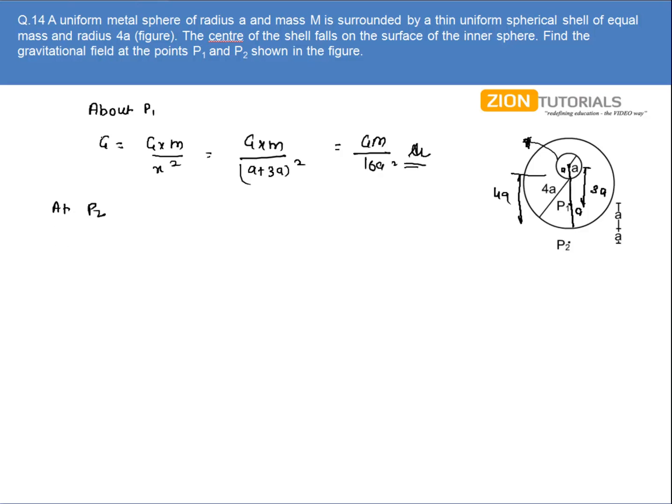So the net gravitational field will be given by G times m - that is due to the metallic sphere. The distance is a + 4a + a, which is (6a)². And due to the hollow sphere, it is G times m because the hollow sphere is of the same mass.